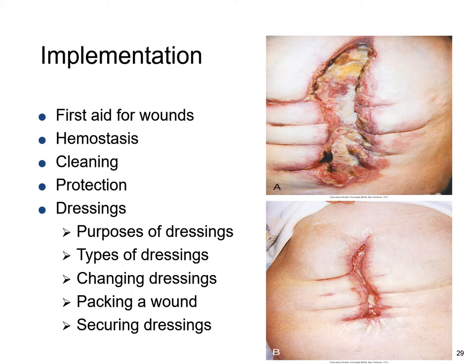Gauze sponges are the oldest and most common form of dressings — absorbent and especially useful to wick away wound exudate. Hydrocolloid dressings have a complex formulation of colloids and adhesive components; they are both adhesive and occlusive. The wound contact layer forms a gel as wound exudate is absorbed, maintaining a moist healing environment. Hydrocolloids support healing in clean granulating wounds.